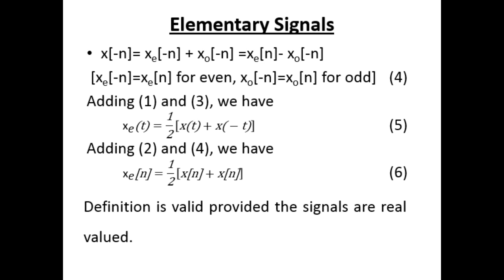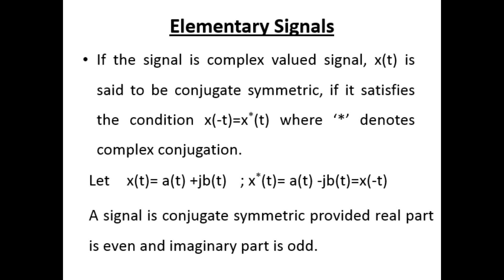Adding the equations, we get xₑ(t) = ½[x(t) + x(−t)], and xₑ(n) = ½[x(n) + x(−n)]. This definition is valid provided the signals are real-valued. For a complex-valued signal, x(t) is said to be conjugate symmetric if it satisfies x(−t) = x*(t). If x(t) = a(t) + j·b(t), then x*(t) = a(t) − j·b(t) = x(−t). The signal is conjugate symmetric provided real and imaginary parts satisfy respective conditions.